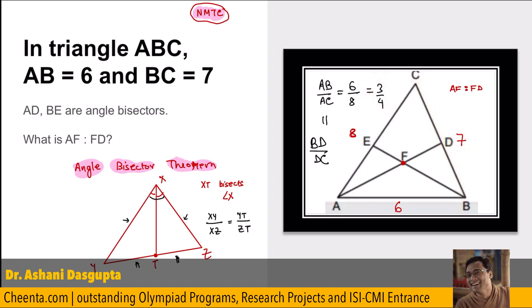Which means BD is 3, DC is 4. As simple as that.